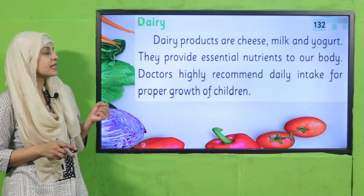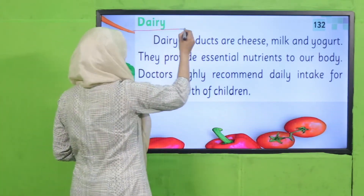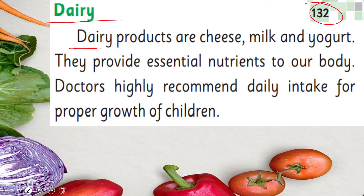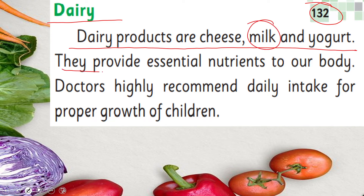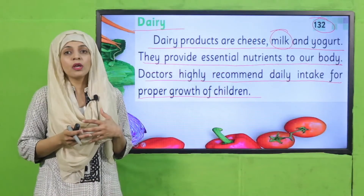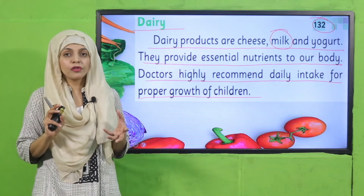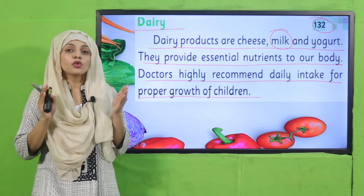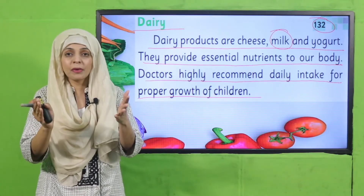Next is dairy - let's read about that on page number 132. 'Dairy products are cheese, milk, and yogurt. Anything that is made from milk is called dairy. They provide essential nutrients to our body. Doctors highly recommend daily intake for proper growth of children.' Dairy products like milk, yogurt, cheese, and butter are extremely good for our body because they provide lots of nutrients and help us in growth, which is why doctors recommend them for children.